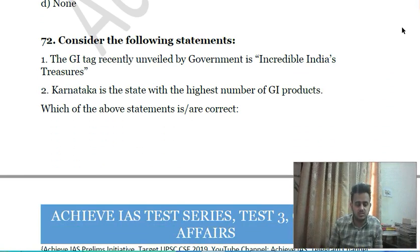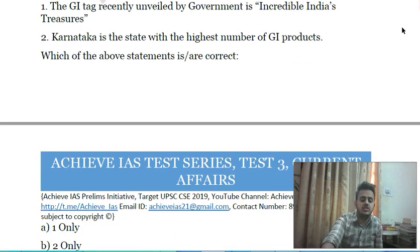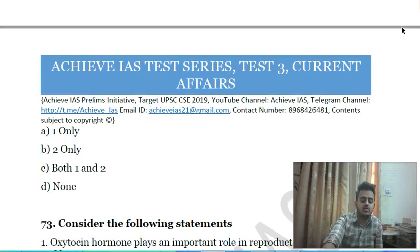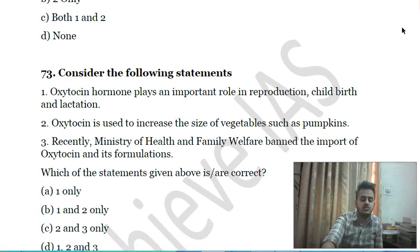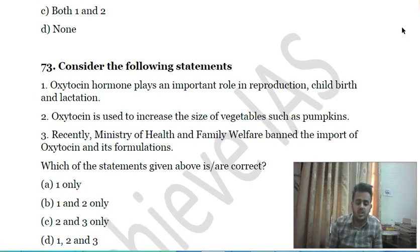Seventy-first question: consider the following statements — first, the GI tag recently unveiled by the government is 'Incredible India's Treasures'; second, Karnataka is the state with the highest number of GI products. Choose the correct answer.